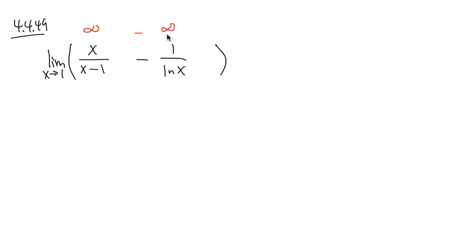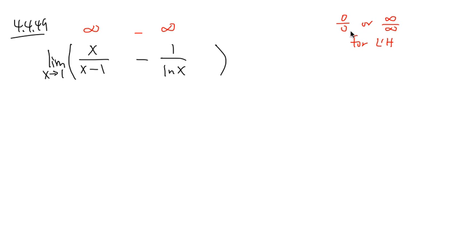This means that we have to do more work. In order to use L'Hôpital's rule, remember, L'Hôpital's rule is only valid for 0 over 0, or infinity over infinity — those are the only two situations. So the hint is: notice that a single fraction gives us 0 over 0 or infinity over infinity, but here we have two fractions. We might as well try to combine these two fractions so that we have a chance to use L'Hôpital's rule.